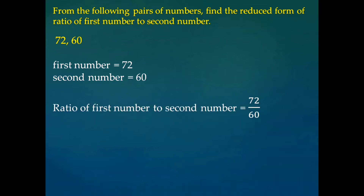The ratio of first number to the second is 72 divided by 60. If we divide both numbers by 12, we get 12 fives are 60 and 12 sixes are 72. That gives us 6 divided by 5. So the reduced form of the ratio of these two numbers is 6 is to 5.